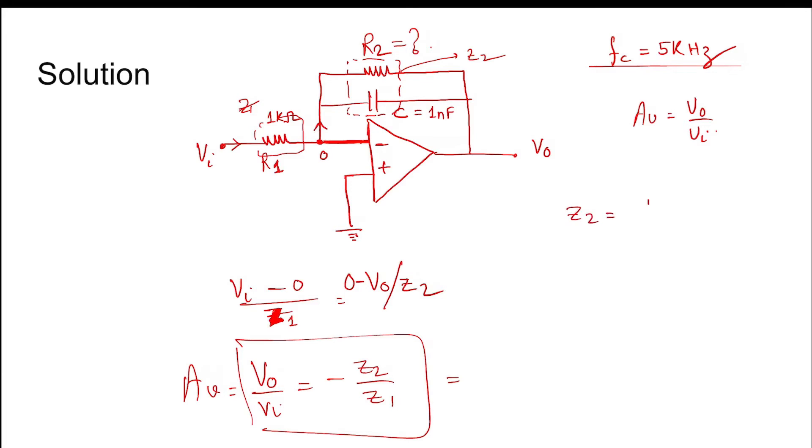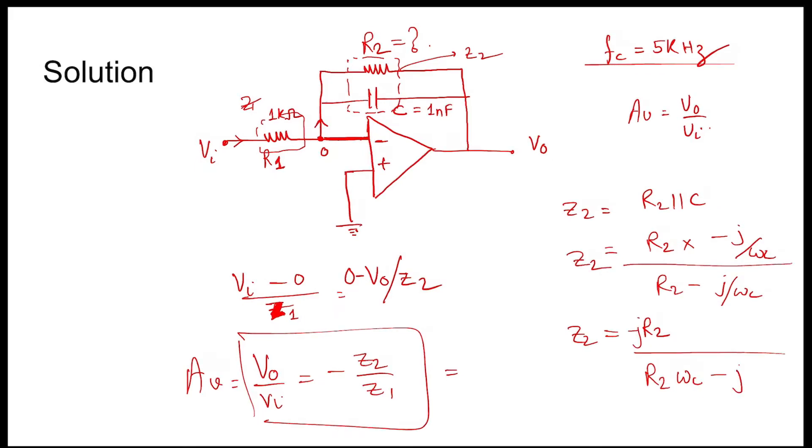Now Z2: Z2 value is R2 parallel C, so it is R2 times minus j/(ωC) divided by R2 minus j/(ωC), which equals R2 divided by (R2ωC minus j). Multiplying minus j on numerator and denominator...